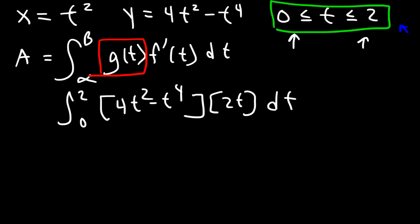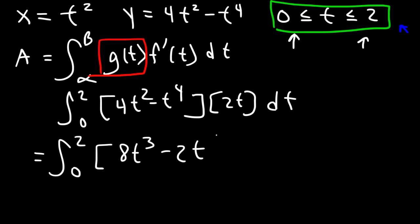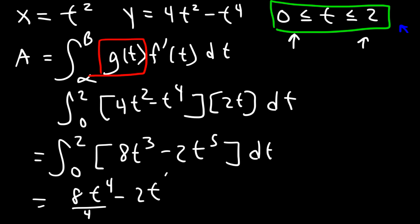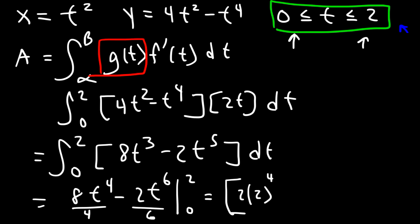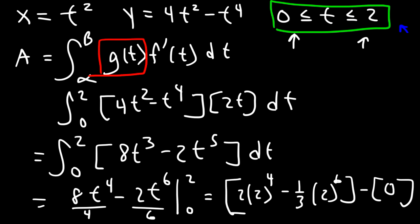Distributing 2t into the expression: 4t squared times 2t gives 8t cubed, and t to the 4th times 2t gives 2t to the 5th. The antiderivative of 8t cubed is 8 times t to the 4th over 4, and the antiderivative of 2t to the 5th is 2 times t to the 6th over 6. Evaluating from 0 to 2: plugging in 2, 8 over 4 is 2, giving 2 times 2 to the 4th; and 2 over 6 reduces to one third times 2 to the 6th. Plugging in 0 gives zero.